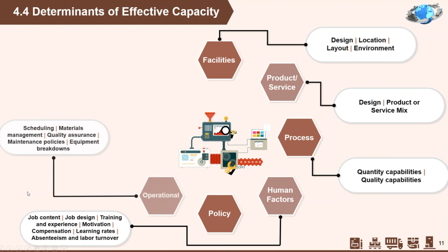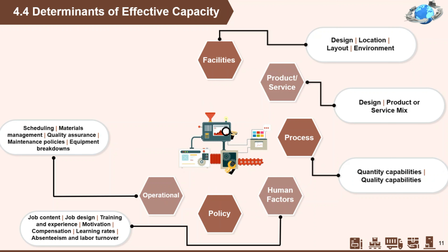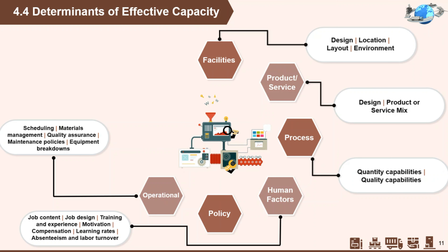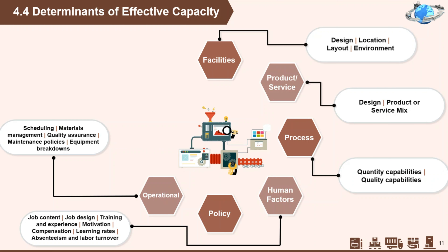Next, operational factors. Scheduling problems may occur when an organization has differences in equipment capabilities among alternative pieces of equipment or differences in job requirements. Inventory stocking decisions, late deliveries, purchasing requirements, acceptability of purchased materials and parts, and quality inspection and control procedures can also have an impact on effective capacity. Inventory shortages of even one component of an assembled item can cause a temporary halt to assembly operations until the components become available, which can have a major impact on effective capacity.